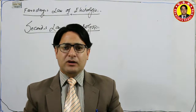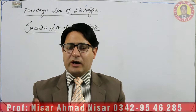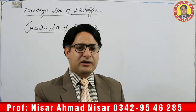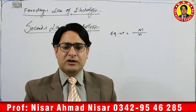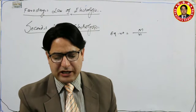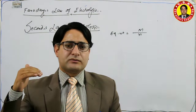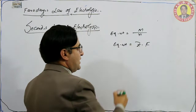In electrochemistry, the formula to find equivalent weight is: equivalent weight = molar mass / number of electrons transferred. Another definition of equivalent weight is: equivalent weight = Z × F, where Z is the electrochemical equivalent and F is the Faraday constant.